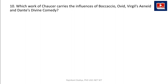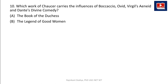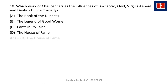The next question: which work of Chaucer carries the influences of Boccaccio, Ovid, Virgil's Aeneid, and Dante's Divine Comedy? Options: The Book of the Duchess, The Legend of Good Women, Canterbury Tales, or The House of Fame. The correct answer is D: The House of Fame.